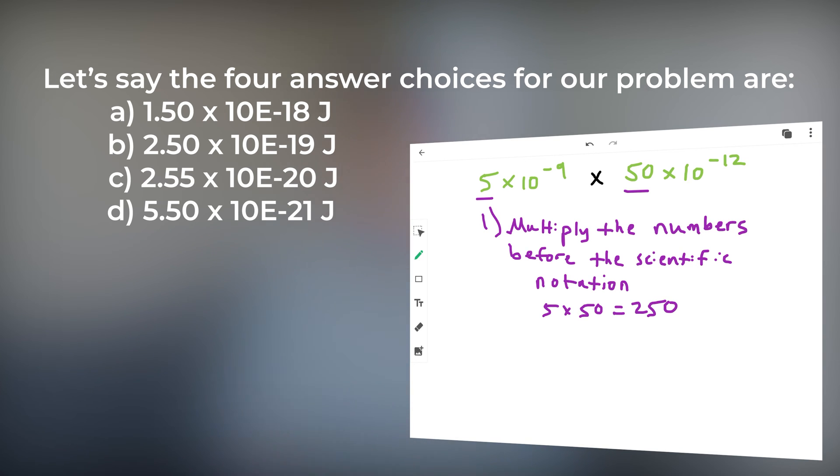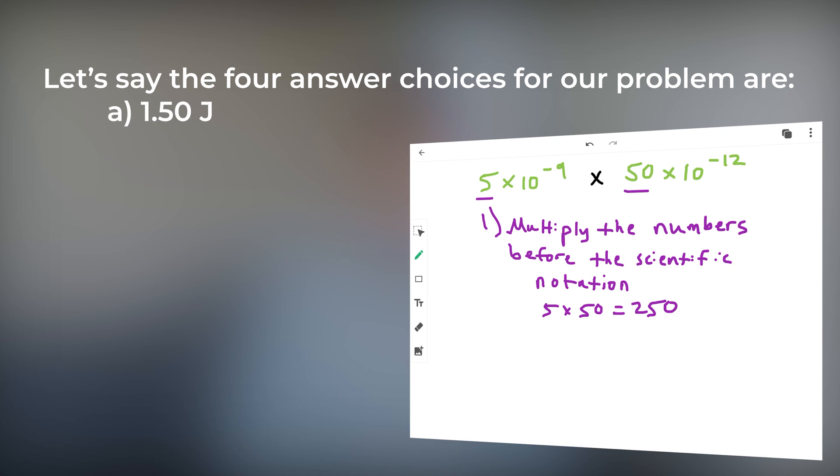Now let's simplify the answer choices by removing the scientific notation in our problem. The 4 answer choices for our problem are now 1.5 joules, 2.5 joules, 2.55 joules, and 5.5 joules. Which answer choice is most similar to 250? If you said answer choice b, you'd be correct.